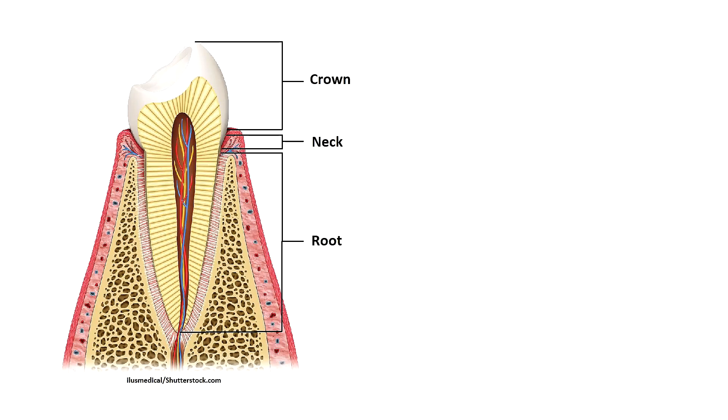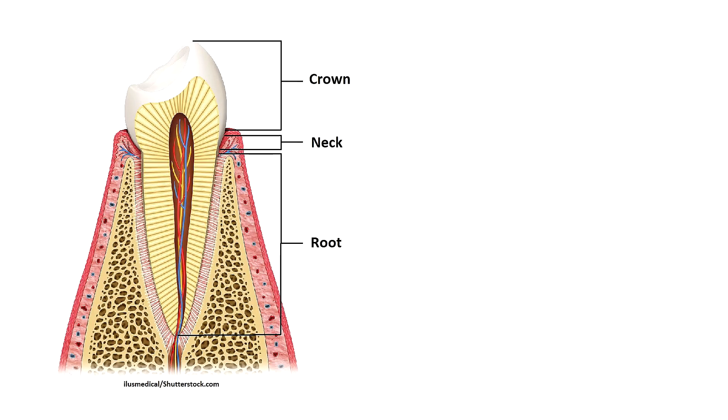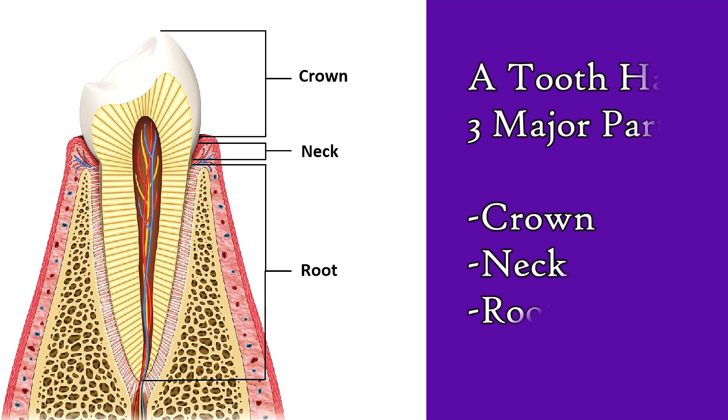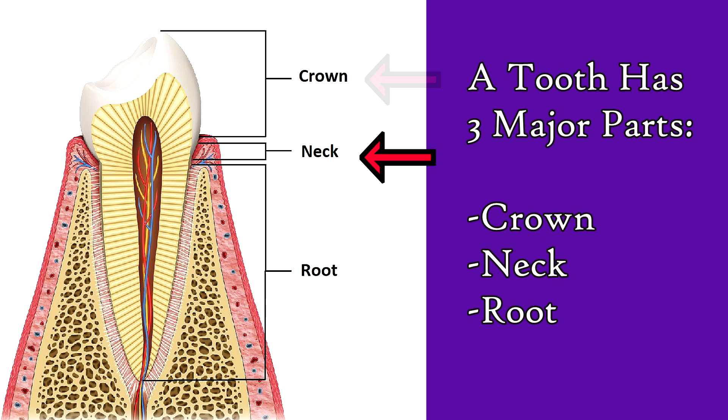Now as you look at the anatomy of a tooth, you will see that it consists of three major parts: the crown, the neck, and the root.